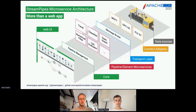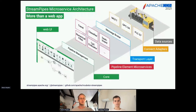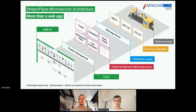StreamPipes is a microservice architecture. Behind the UI, you have a microservice which handles all the pipeline management — for example, starting and stopping pipelines. Then you have all these different pipeline elements which apply functions to the input — for example, a trend detector or classifier. These are all microservices and they communicate with a message broker. And in StreamPipes Connect, you have microservices like an MQTT microservice which can attach to data sources that communicate with MQTT. The message broker just lets all these microservices communicate with each other.